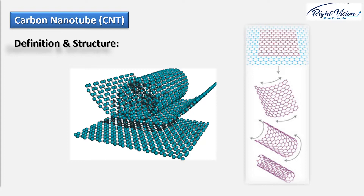Definition and structure. Carbon nanotubes are tubes, or cylinders, made of carbon atoms with diameters typically measured in nanometers. Although not made this way in practice, we can imagine carbon nanotubes as being formed from graphene sheets. Graphene is a one-atom-layer sheet of carbon atoms bonded in a hexagonal network. If you cut through that sheet into ribbons and roll them up along the length, what you are making is a carbon nanotube.